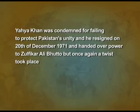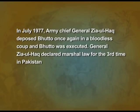After resigning, Yahya Khan handed over power to Zulfikar Ali Bhutto. But in July 1977, Army Chief General Zia ul-Haq deposed Bhutto in a bloodless coup. Bhutto was later executed, and General Zia ul-Haq declared martial law for the third time in Pakistan.